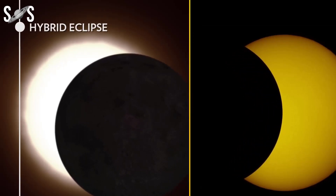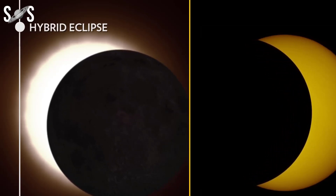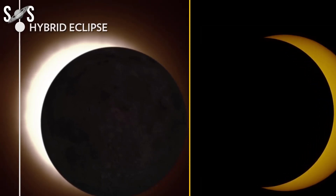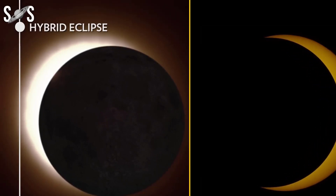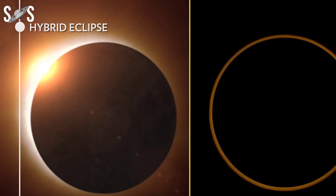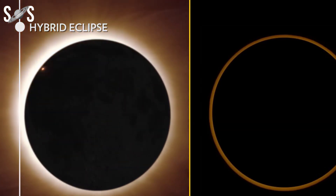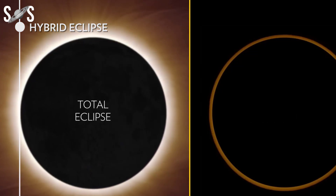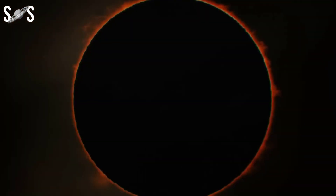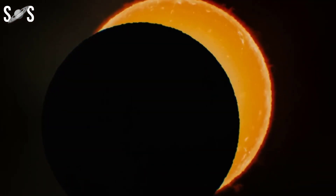If viewed from the side, the location where the umbra transitions into the antumbra marks the spot where the apparent sizes of both celestial bodies are exactly equal. If you move towards the moon from that spot, you enter the umbra and see a total solar eclipse. If you move away from the moon, you enter antumbral territory, so the moon begins to appear smaller than the sun, creating an annular eclipse.